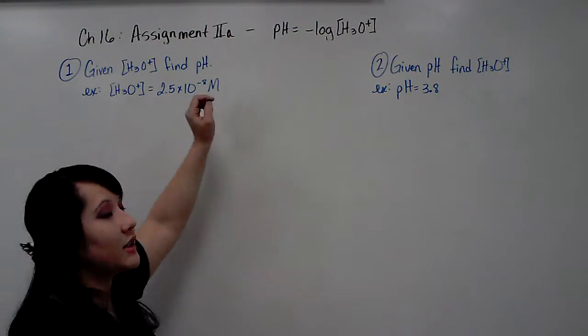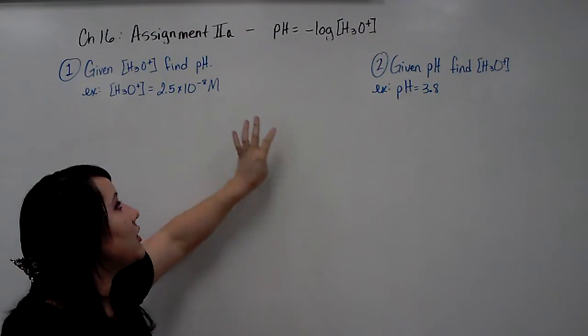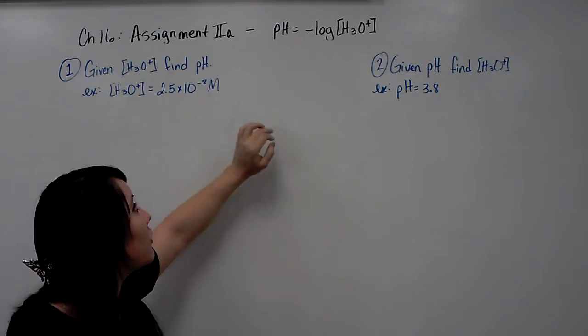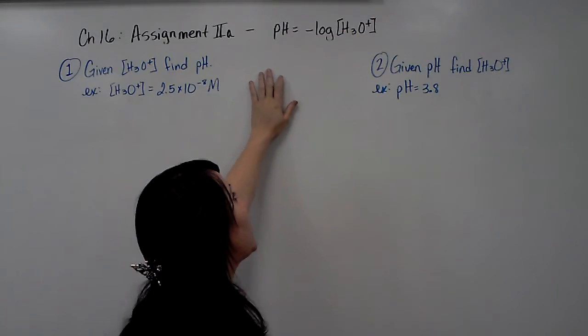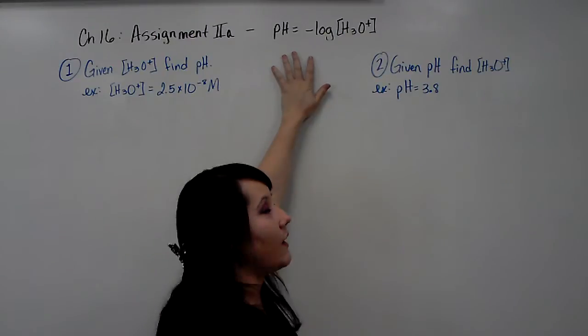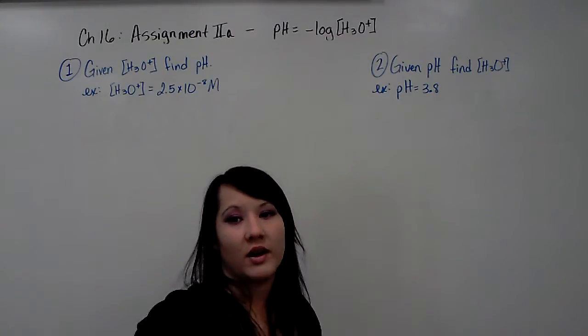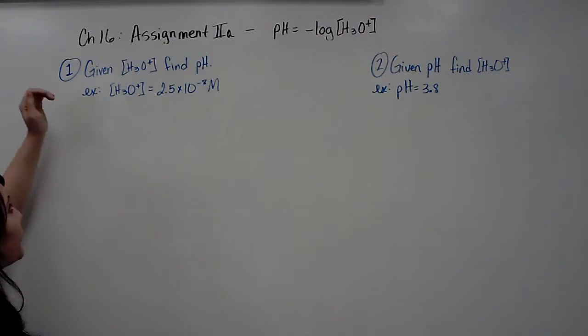Alright, Chapter 16, Assignment 2A. It's labeled 2A because there's a series of three different videos that will accompany this particular lesson. It's broken down by equation. So the equation that we're going to use right now is pH equals negative log of hydronium, and I'm going to show you both ways that the equation can be used.